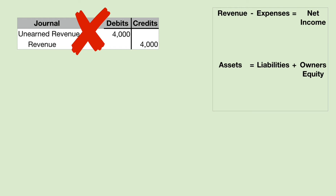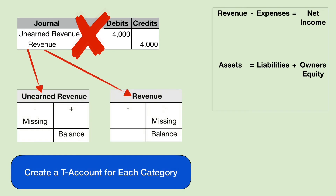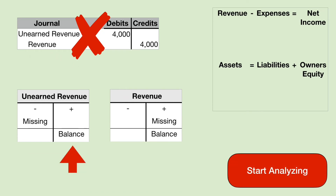Let's do another example. Here is an adjusting entry that we neglected to make. The next thing we would do is make two T-accounts. The unearned revenue account is a liability account, and liabilities have credit balances. That means the plus sign is on the credit side and the balance is on the credit side. We're missing a debit to the unearned revenue. The revenue account has a credit balance — the plus sign is on the credit side — and we are missing a credit number in the revenue account. If you're missing a debit in an account that is supposed to have a credit balance, then you're not subtracting something that you should have and the balance will be too high, or overstated.